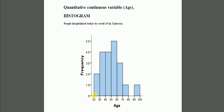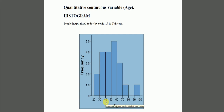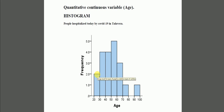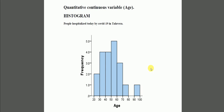Here in this bar, we have all the people from 20 to 30 years old. That means that between 20 and 30 years old, today there were two people hospitalized. Between 30 and 40, there were four people. Between 40 and 50, there were two. Between 50 and 60, there were five. Between 60 and 70, there were three. Between 70 and 80, there was one. Between 80 and 90, there was no one hospitalized. And between 90 and 100, there was one person. So this is what we call a histogram, and it's used for quantitative continuous variables.